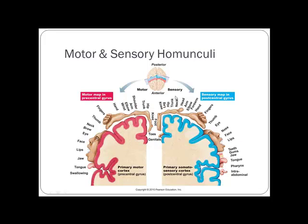There is a motor homunculus and a sensory homunculus — 'homunculus' meaning 'little man.' Looking at the primary motor cortex, areas with a great deal of fine motor movement have a large representation on the homunculus, such as the tongue, lips, facial muscles, and fingers. Areas like the toes and elbow, which have less fine motor movement, have a smaller area.